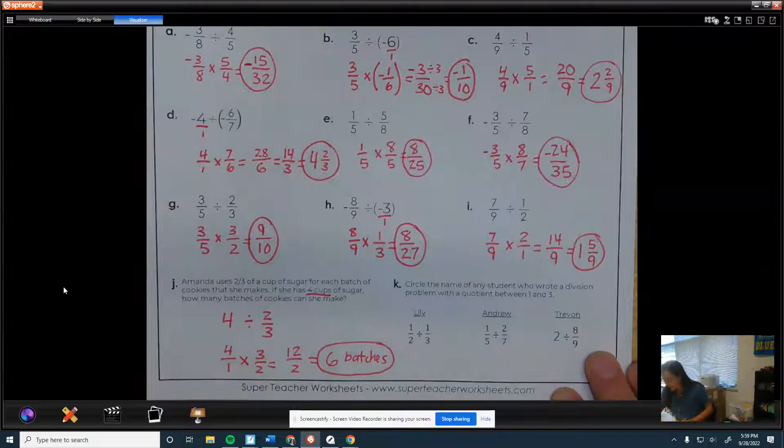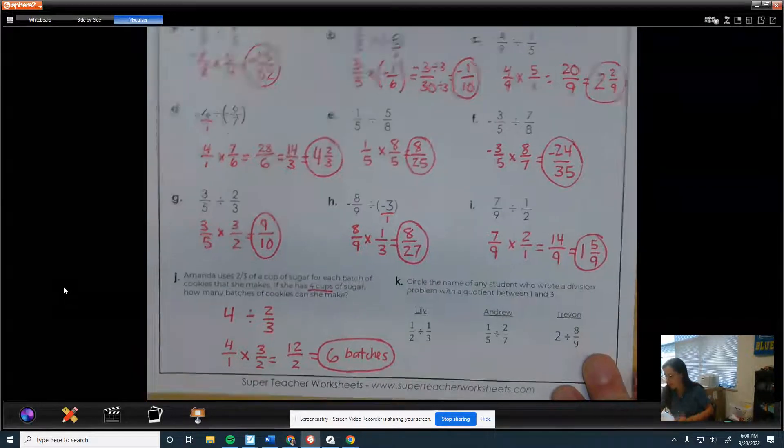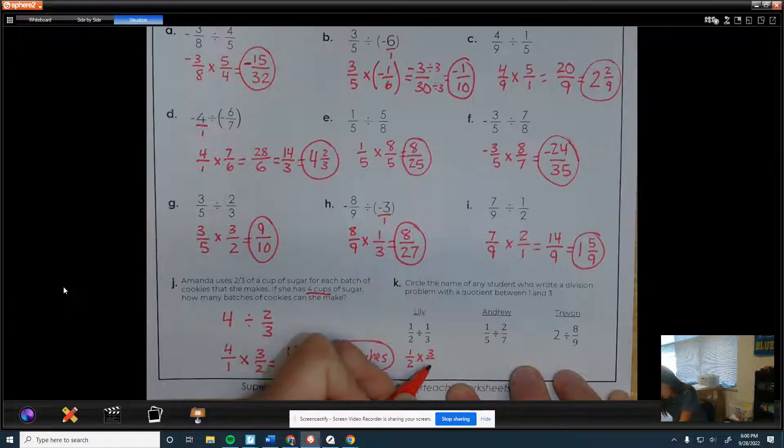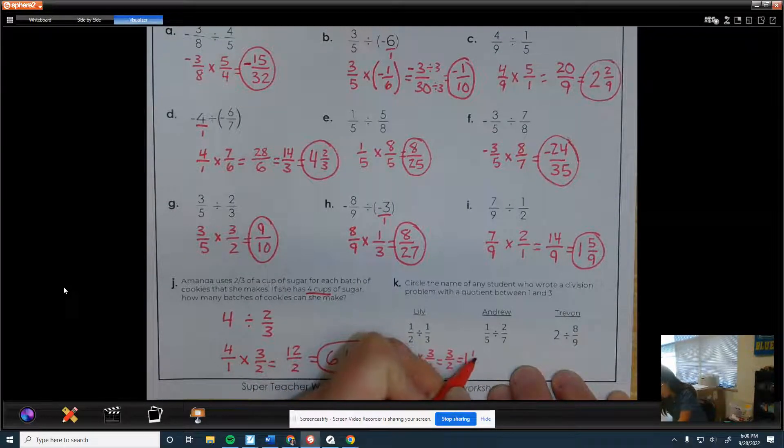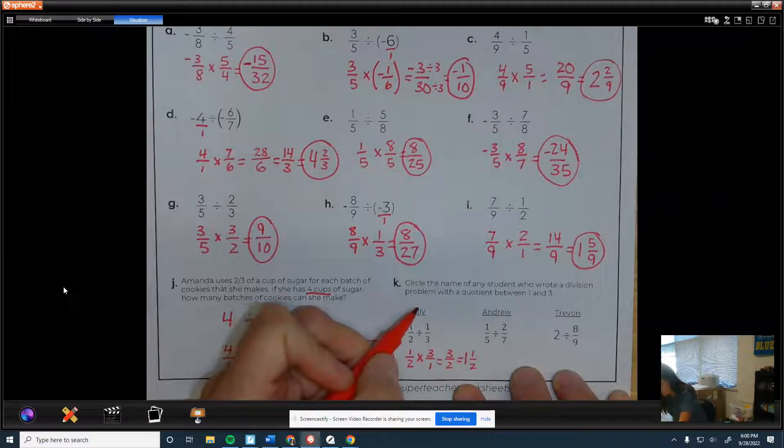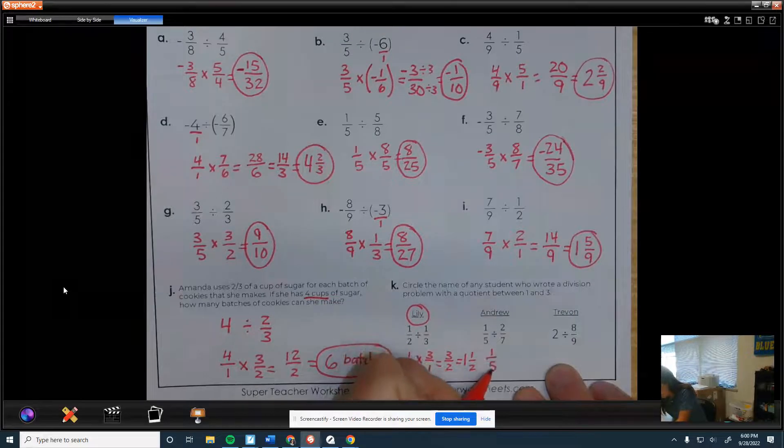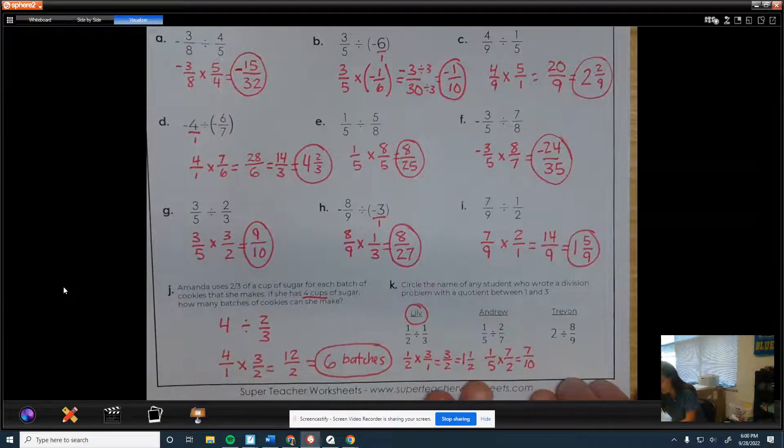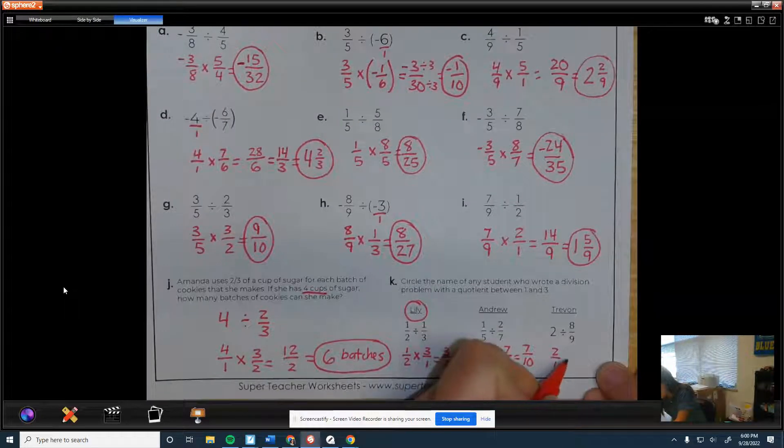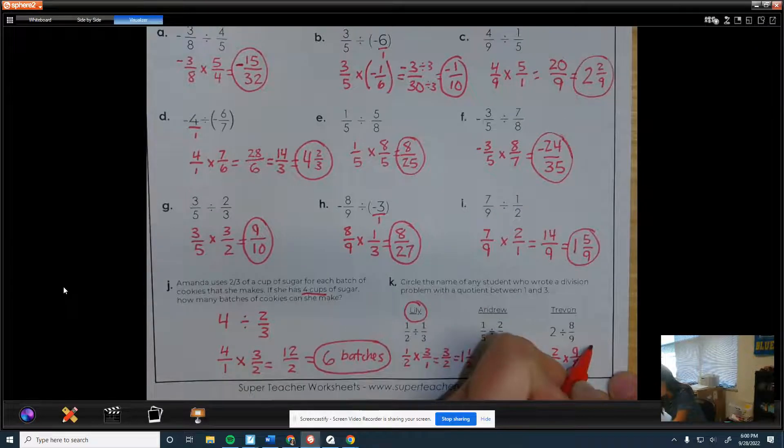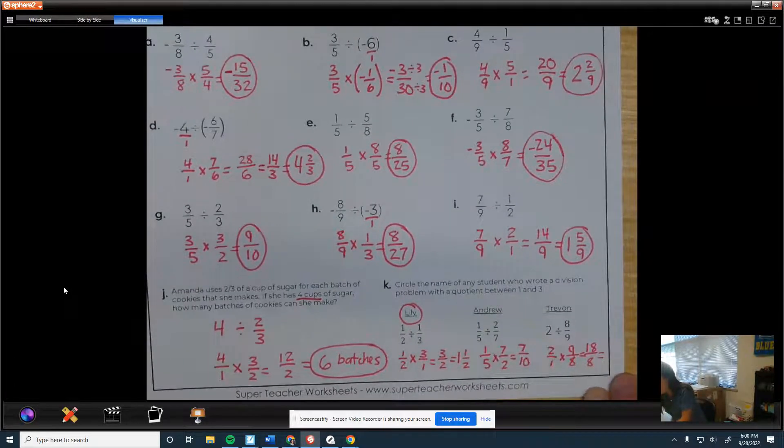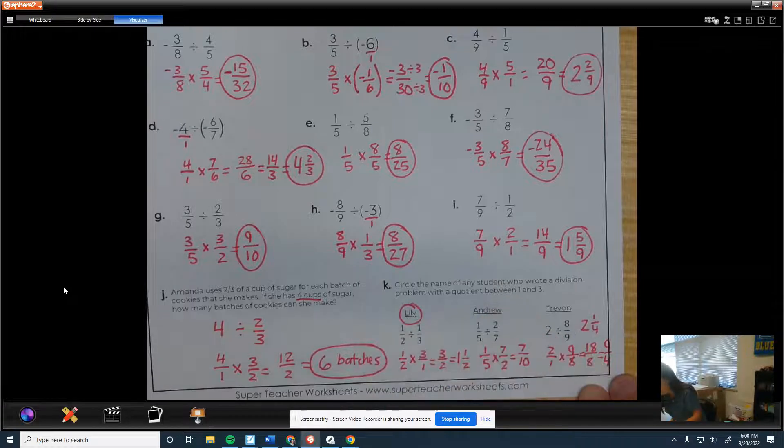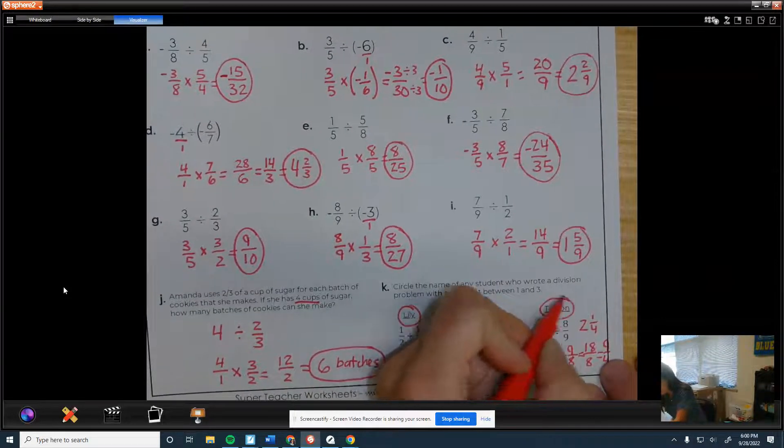If you did set it up correctly, it would be 4 over 1. Keep, change, flip. Then that would be 12 over 2, which is just 6. So six batches. Alright, then the last one. Circle the name of any student who wrote a division problem with a quotient between one and three. Let's see. Keep, change, flip. That would be 3 over 2, which is 1 and a half. So that's between one and three. Andrew, keep, change, flip. That would be 7/10. That's less than one, so that's not going to work. This one. Keep, change, flip. That would be 18/8. Simplify it 9/4. That would be 2 and 1/4, I think. So that's between one and three. So Trayvon and Lily.